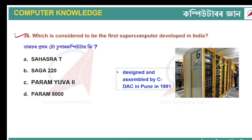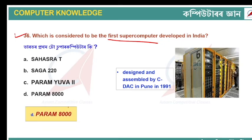Which is considered the first supercomputer developed in India? The answer is PARAM 8000. PARAM 8000 was designed and assembled by C-DAC in Pune around 1991.